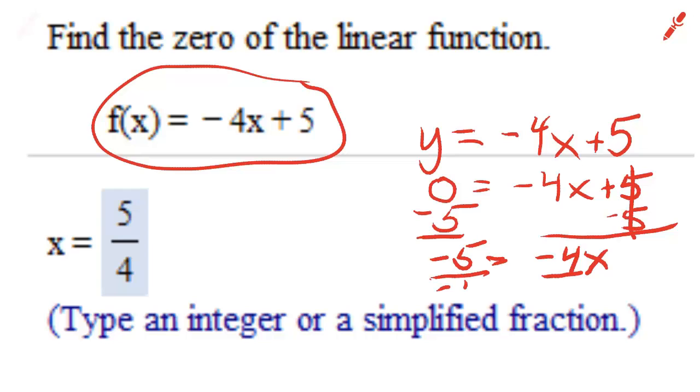Negative over negative is positive. The negative 4s cancel out here leaving me with x. The negative signs cancel out here leaving me with 5 fourths, which is indeed the answer.